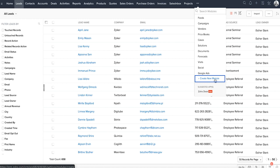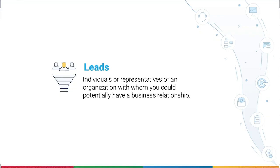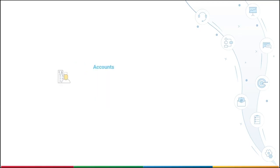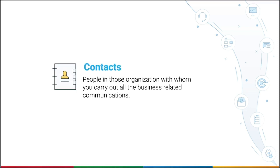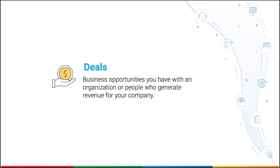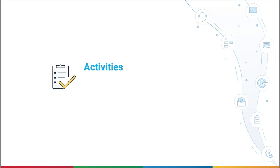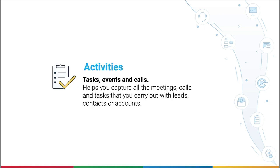Leads are the individuals or representatives of an organization with whom you could potentially have a business relationship. Accounts represent companies or departments within a company with which your organization has business. Contacts are the people in those organizations with whom you carry out all business-related communications. Deals are the business opportunities you have within an organization or people who generate revenue for your company. Activities help you capture all of the meetings, calls, and tasks that you carry out with the leads, contacts, or accounts.